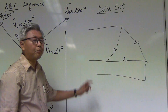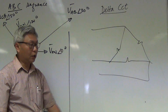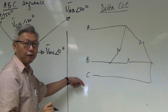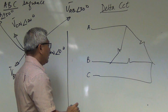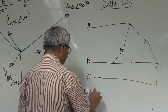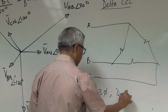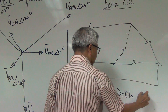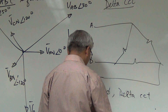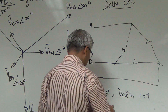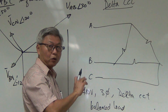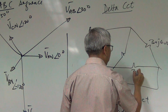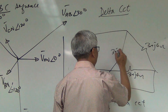This time I don't draw the source anymore, I just draw the load side. So this is phase A, phase B, and phase C. If the question says this is a 400-volt three-phase delta system, the load is a balanced load — meaning all three loads are the same — so this is three plus j4 ohm, three plus j4 ohm, and three plus j4 ohm.